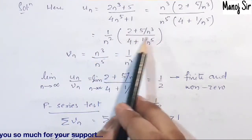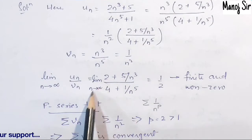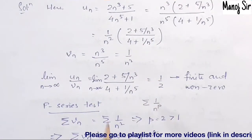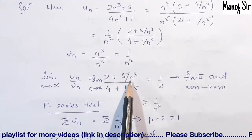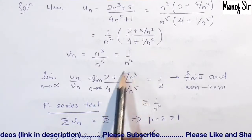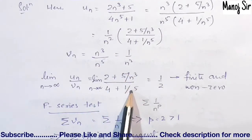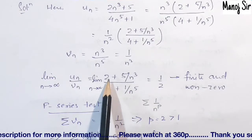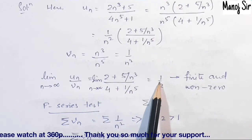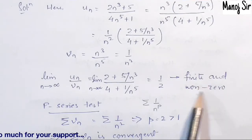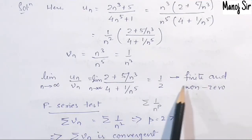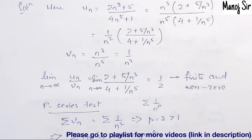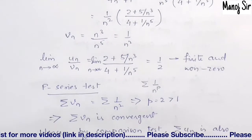Computing u_n upon v_n: the 1/n^2 terms cancel, leaving the limit as n tends to infinity of (2 + 5/n^3) / (4 + 1/n^5). As n approaches infinity, 5/n^3 and 1/n^5 go to zero, leaving 2/4 = 1/2. Since 1/2 is finite and nonzero, we proceed with the p-series test.